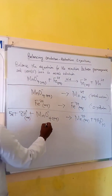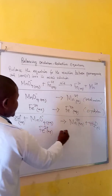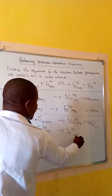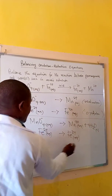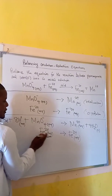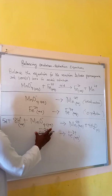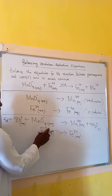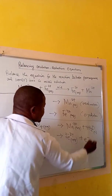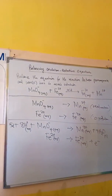We now come to the second reaction — the oxidation half-reaction. The iron(II) to iron(III) atoms are already balanced, so we just need to balance the charge. On the left we have positive two, so we add one electron to the right side to balance the charge.